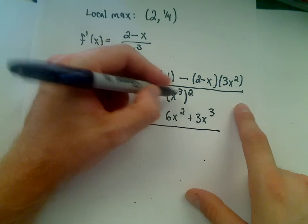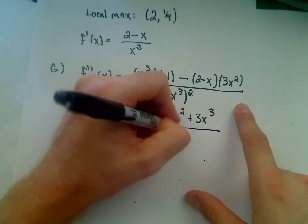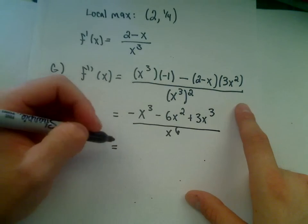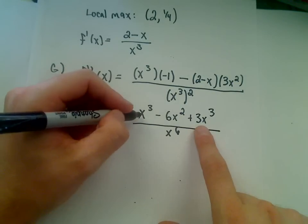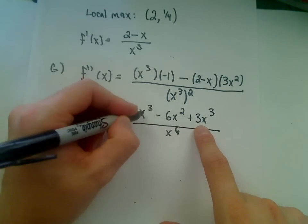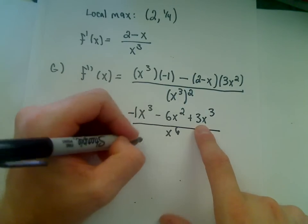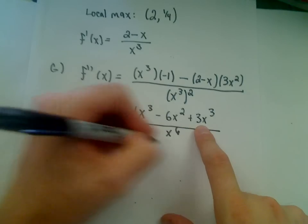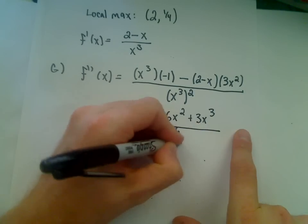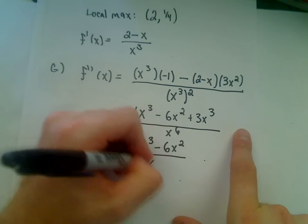And the denominator, x cubed squared, will give us x to the 6. We'll just multiply. Combine your like terms. It looks like we've got negative 1x cubed, positive 3x cubed. That's going to give us 2x cubed minus 6x squared over x to the 6th.